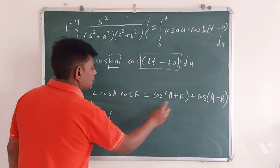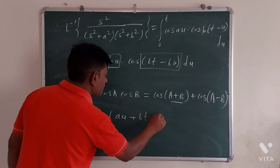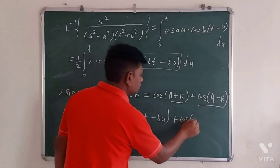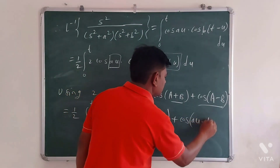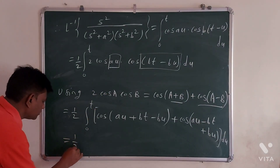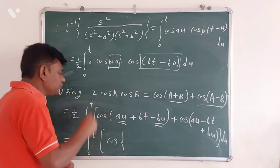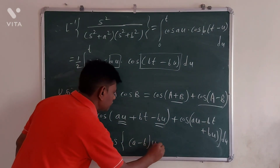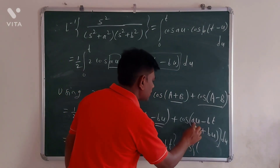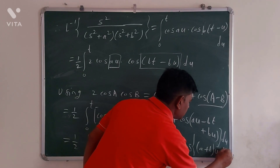So this integral equals one half times the integral from 0 to t of [cos(A plus B) plus cos(A minus B)] du. Expanding: cos(A plus B) equals cos(au plus bt minus bu) and cos(A minus B) equals cos(au minus bt plus bu). Collecting terms, this becomes one half times the integral from 0 to t of cos((a minus b)u plus bt) plus cos((a plus b)u minus bt) du.